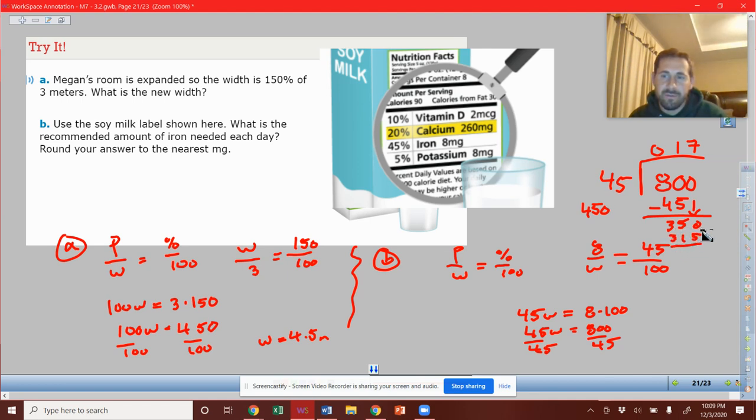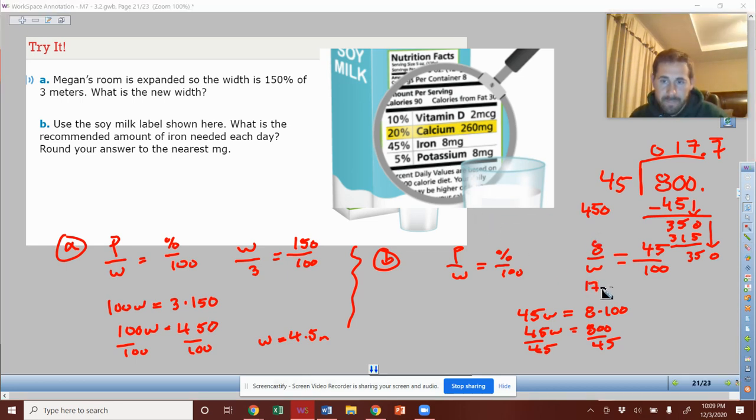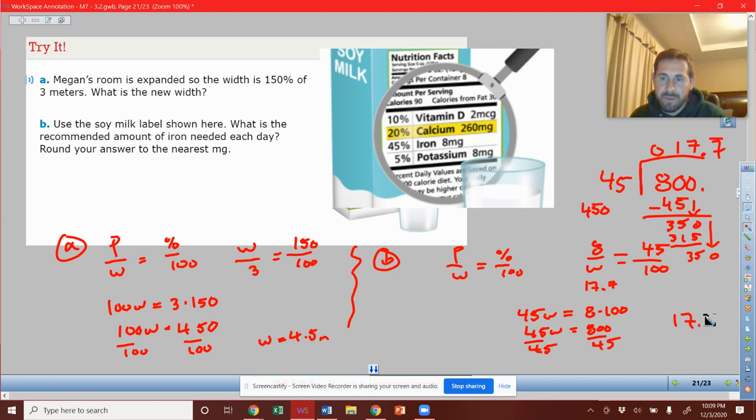We're at 315. So 350 minus 315 is going to be 35, right? So I'll bring down my 0. And hopefully you notice that this, bring up the decimal, it's going to be repeated. So what amount we need there is we should be having 17.7 repeated. And 17.7 repeated, that's the same as saying seven ninths. So we should be consuming 17 and seven ninths, so somewhere between 17 and 18 milligrams.